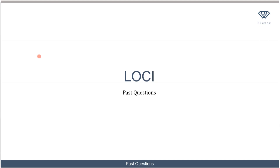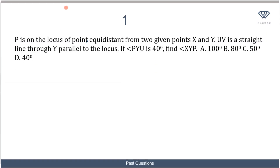We're going to be looking at some past questions to see how to apply the concepts we've learned. The first one tells us that P is on the locus of points equidistant from two given points X and Y. Before we discuss the answer, recall that the locus of points equidistant from two given points is the line perpendicular to the segment joining those points.